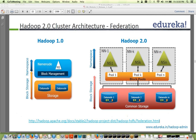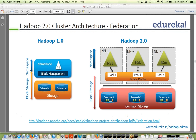The second name node won't know about the metadata of the first name node because they don't care — they just manage their own pool. The main difference in Hadoop 2 is the multiple name node concept. So instead of one name node, you can divide your cluster to have multiple name nodes, each looking at a certain pool of blocks. That is the concept of federation.